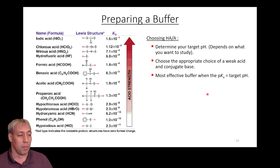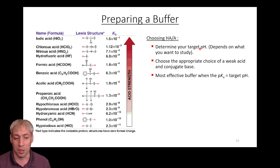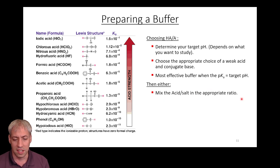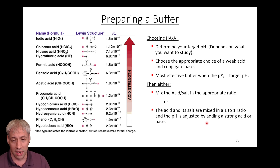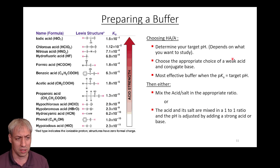There are many different buffer solutions — basically any weak acid and its conjugate base together in solution is a buffer. To prepare one, identify your target pH, find an acid with a pKa close to that target, and mix the conjugate acid-base pair in the appropriate ratio. You can mix acid and salt, add OH⁻ to adjust concentrations, or add H⁺ to bring ratios to one-to-one. Knowing the pKa values lets you pick the right acid combination for your buffering goals.